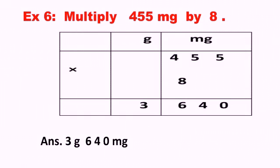Now look at question six: multiply 455 mg by 8. I have made two columns — gram and milligram — because we can write a maximum of 3 digits under milligram, and any carry goes to the gram column. After multiplication: 8 fives are 40, write 0 carry 4; 8 fives are 40 plus 4 is 44, write 4 carry 4; 8 fives are 32 plus 4 is 36, so 6 under milligram and 3 under gram. Answer: 3 gram 640 milligram.